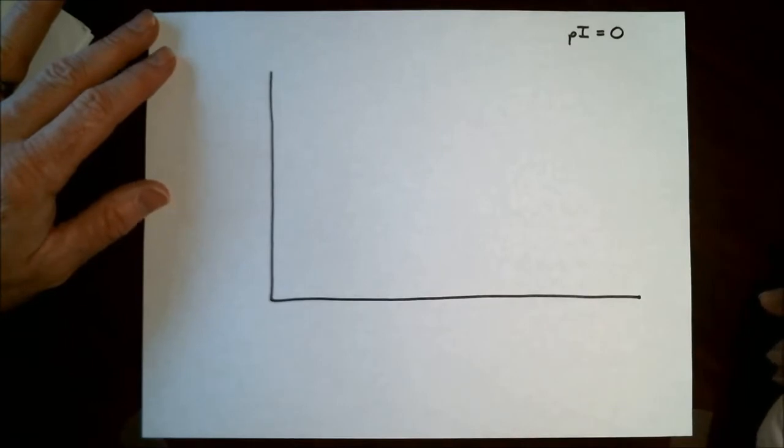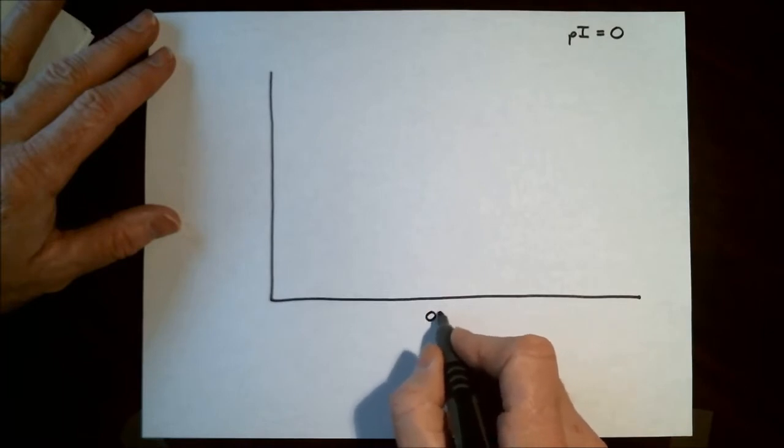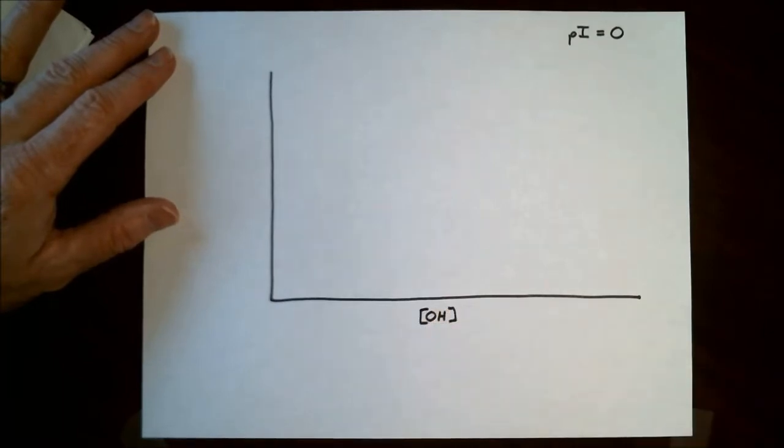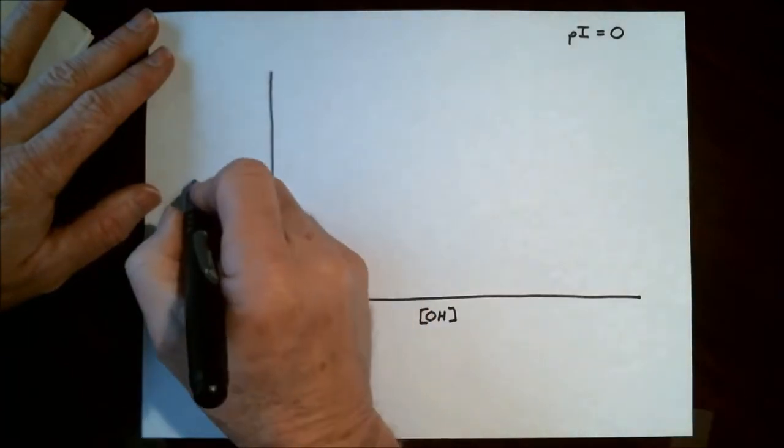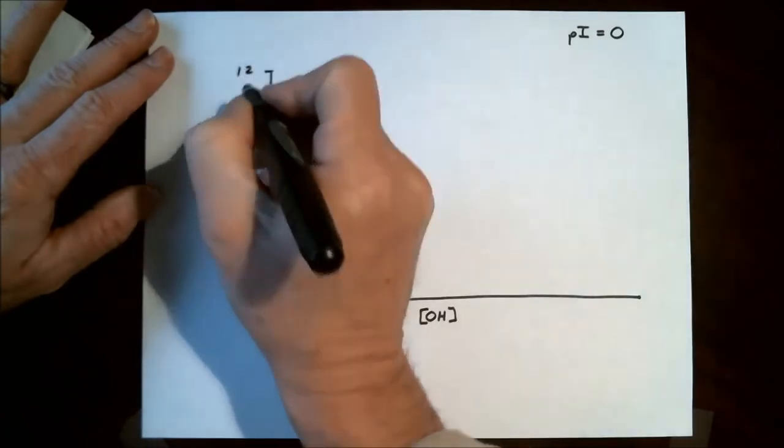So how do we calculate that? Well, we are going to titrate the aspartic acid solution with hydroxide ion in order to remove the proton that is bound to the molecule. So let's look at our scale of pH.